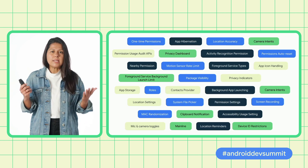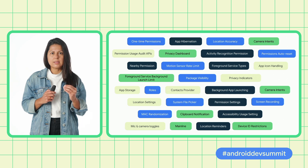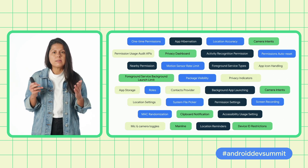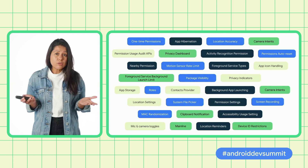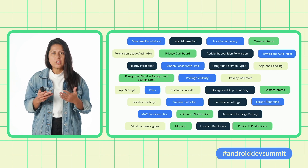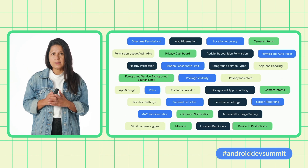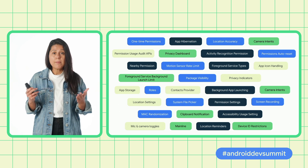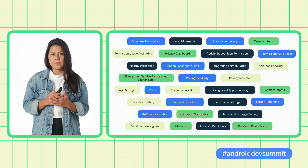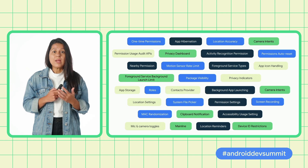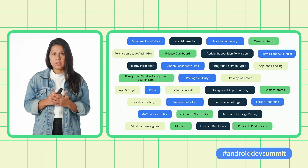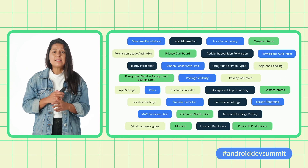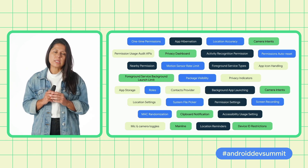Users care deeply about privacy. They consistently tell us that they want an OS that protects their privacy and treats their data with care. As more of our day-to-day core functionalities move to the mobile device, people will naturally seek out devices that will keep them and their data safe. And from day one on Android, we have designed privacy for everyone. Particularly over the last several releases, we've made significant strides in keeping users' information safe.